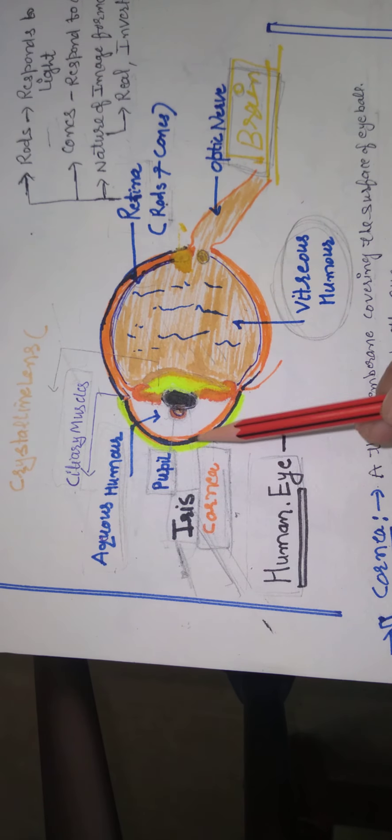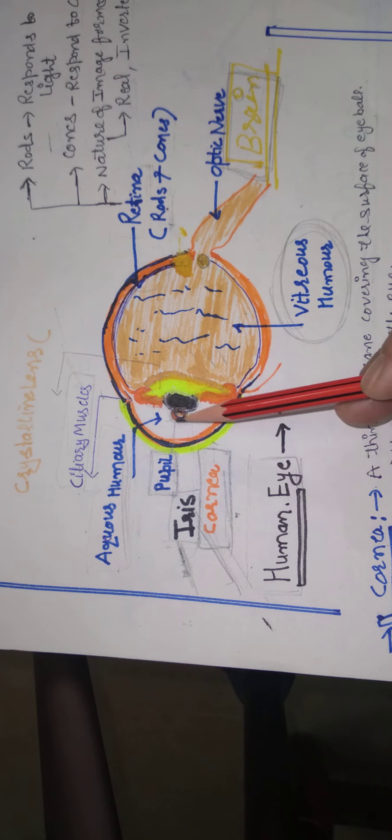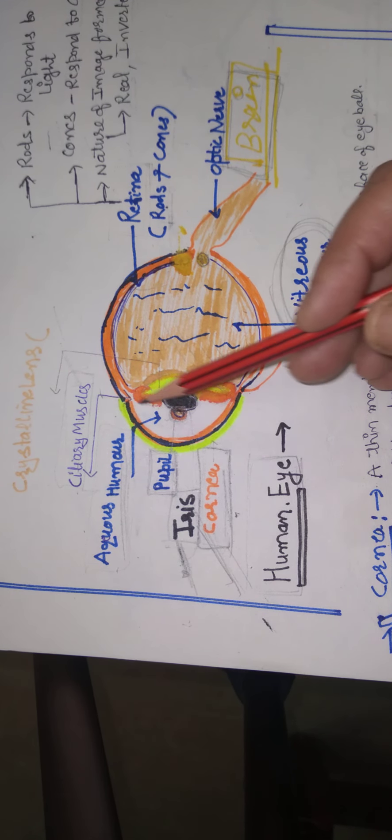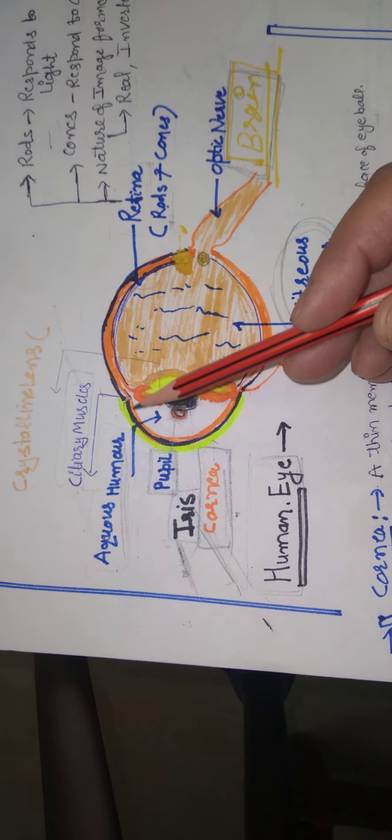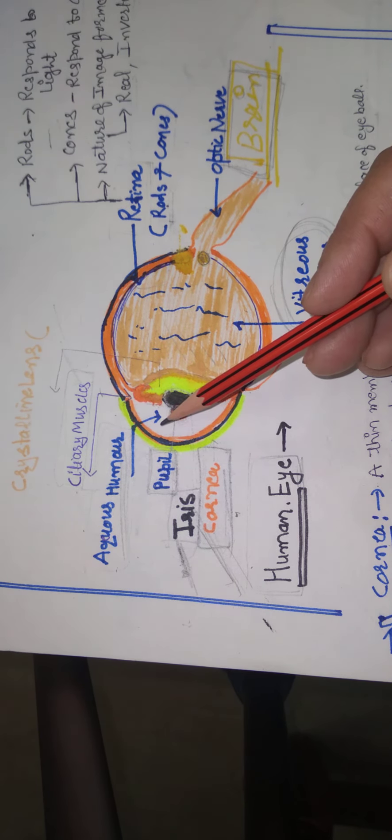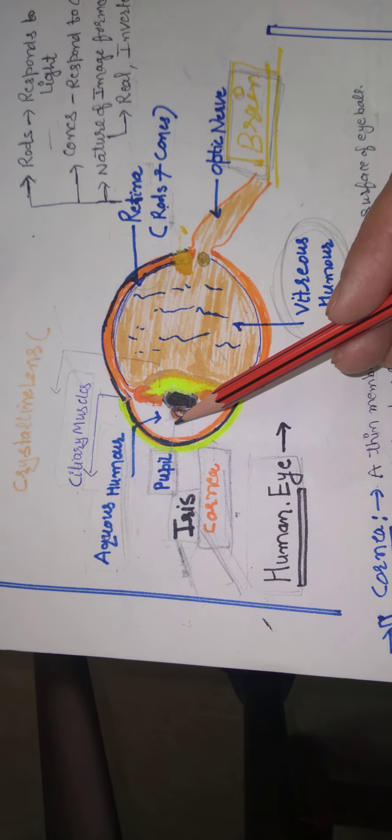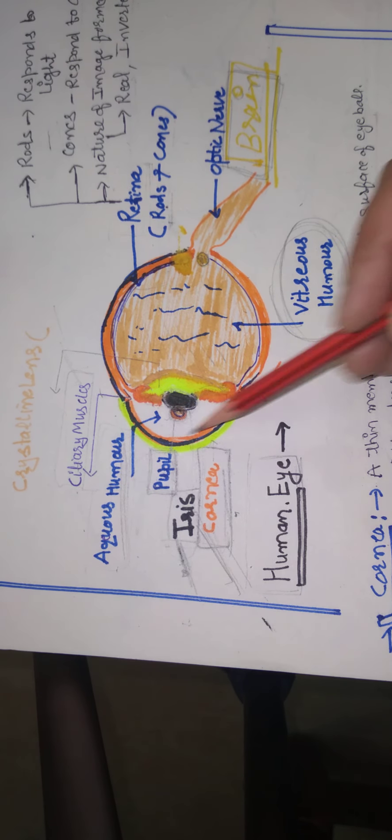Aqueous humor provides strength to the cornea, cornea को power देता है और aqueous humor की वजह से tears आते हैं. जिसकी वजह से eyes में and eye को वो moist रखता है, उसको थोड़ा गिला रखता है ताकि eye की movement में कोई difficulty न हो.